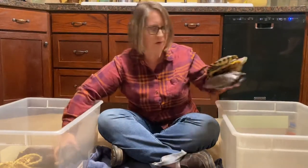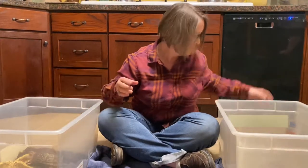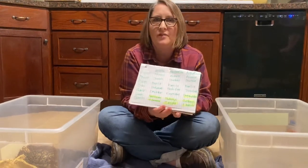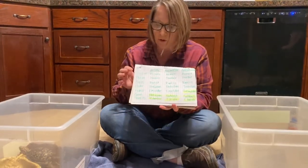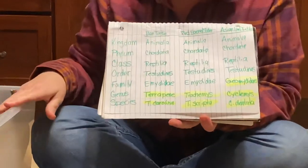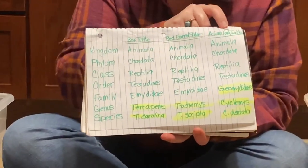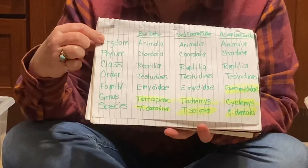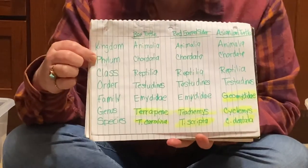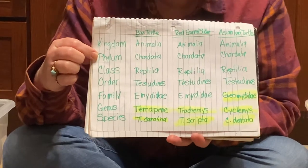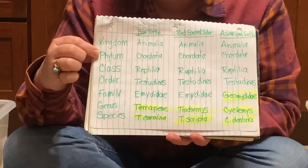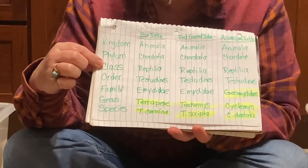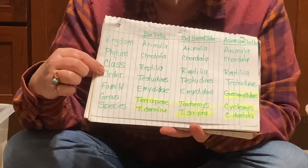I want to show you a little chart because my students have been learning about how scientists classify and sort animals. When we look at this, we've got the box turtle, the red-eared slider, and the Asian leaf turtle. All of them are in the same kingdom — they're all animals — and the same phylum, chordata, which means they have a spinal cord. That doesn't mean they have a backbone, but they all have a spinal cord. They are all in the same class: they are all reptiles, and they are all in the same order.